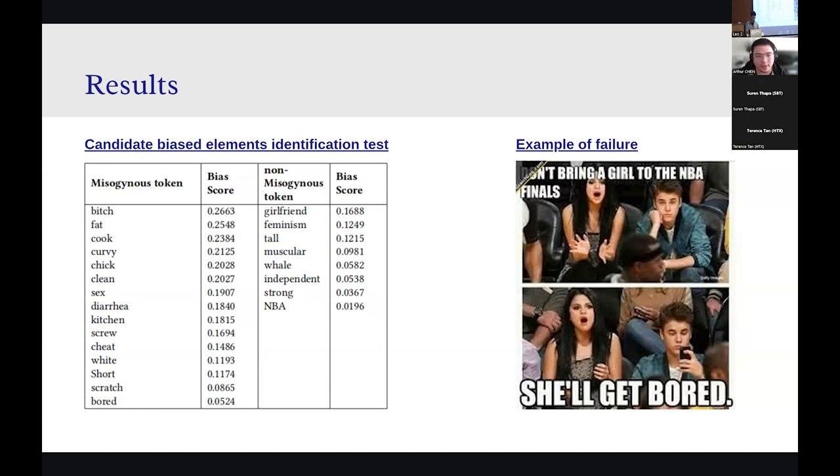But also, on the other hand, this table actually explains some of the failure that the model may experience during the predictions. For example, here is a meme that model failed to classify as misogynist because some of the main tokens, such as MBA or board, they get a relatively low score in these identification tasks, which means that the misogynist information in this kind of memes is more implicit and it requires a model to have a more comprehensive understanding of the full context, which is sometimes beyond the model's capabilities.